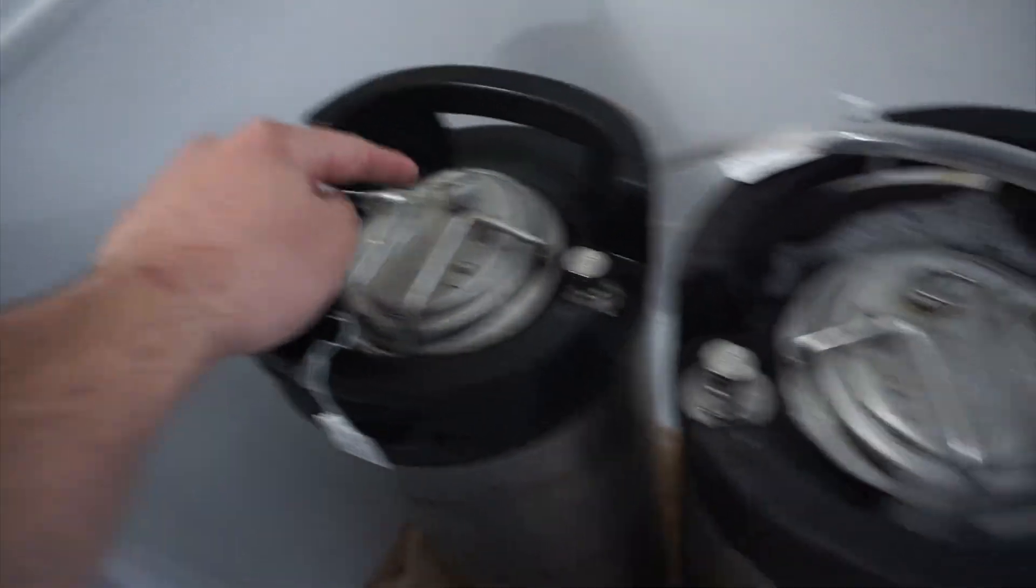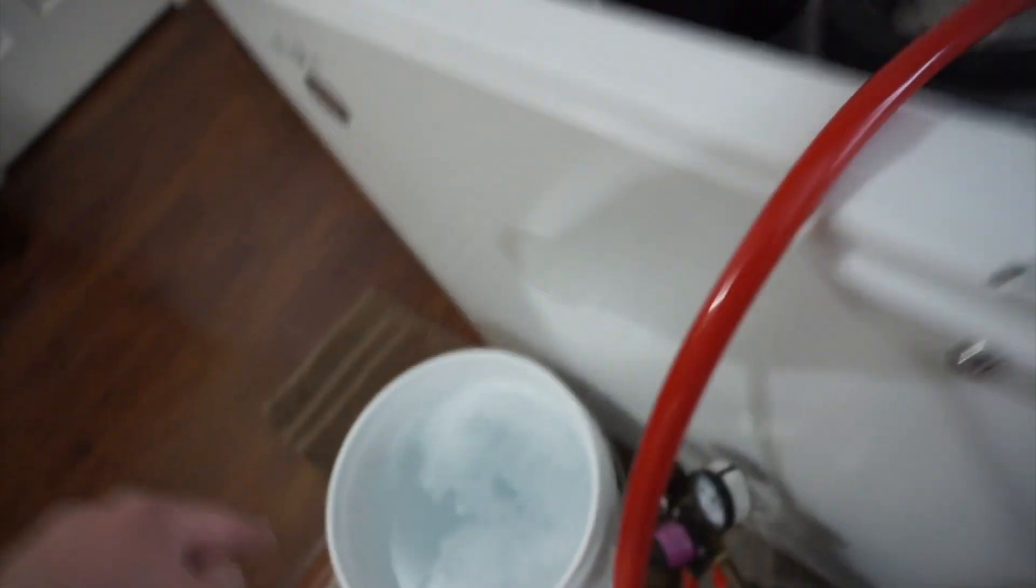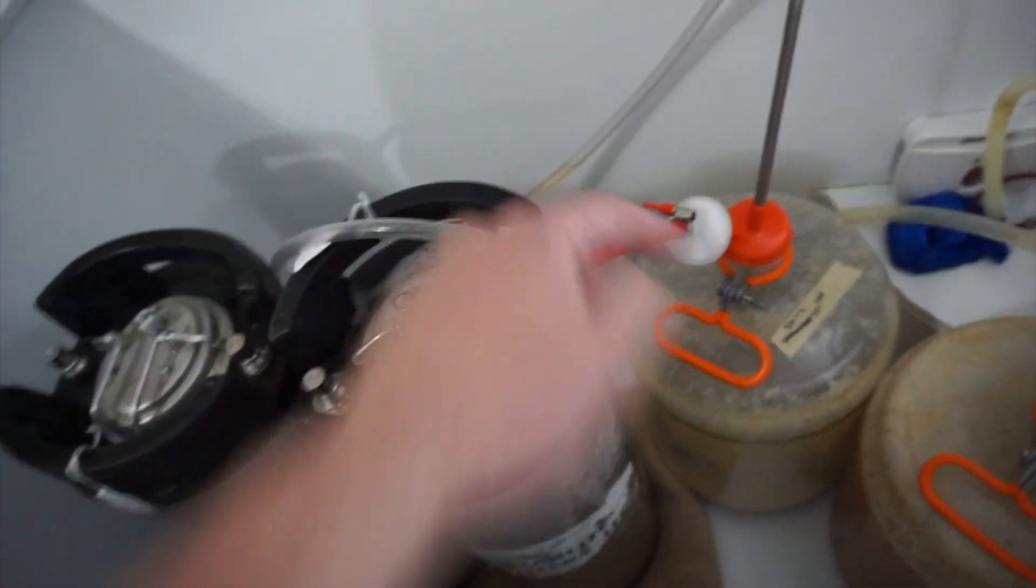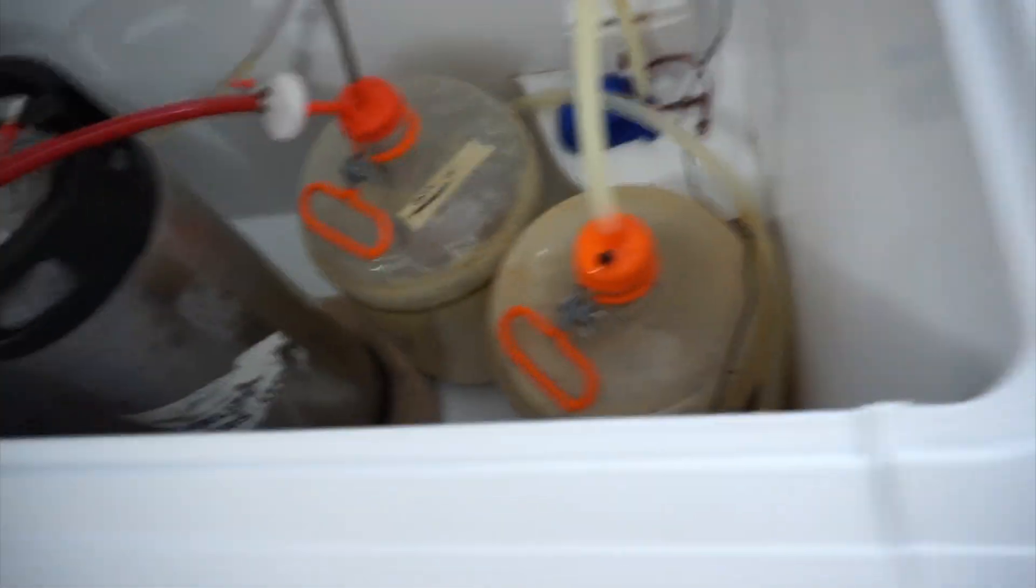All right, we emptied out the carboy. Got as much as we could out of there. Pop the poppet back down. Now we're going to pull this out, dump it in the sanitizer, shake it about, and put it into this one and do the same into the other keg where it's already hooked up. Make sure you're sanitizing the post connections with your spray bottle before and after just to minimize any sort of contamination potential. Both beers are transferred over.